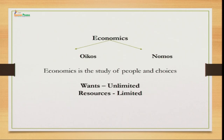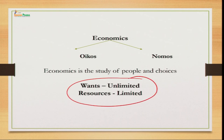If we look at the word economics, it comes from two words: oikos and nomos. Oikos means the people or household, whereas nomos means the laws. So this subject tells us about how the laws of the people work in the economy. It is the study of people and choices, where wants are unlimited and resources are limited. This is the basic thing which economics revolves around — how we are going to utilize our unlimited wants with these limited resources so that maximum satisfaction can be achieved.